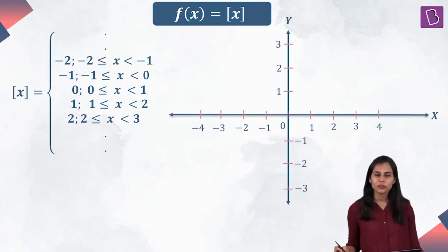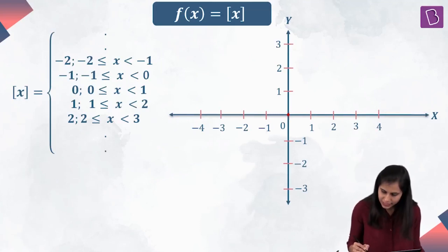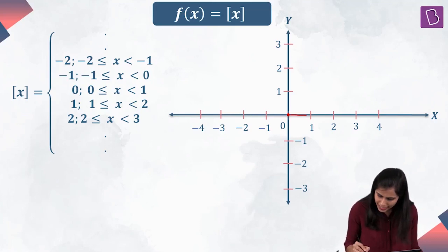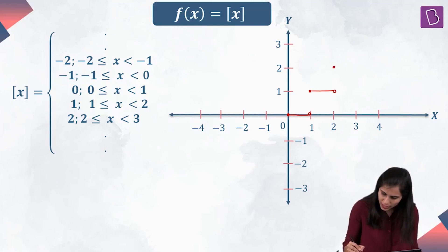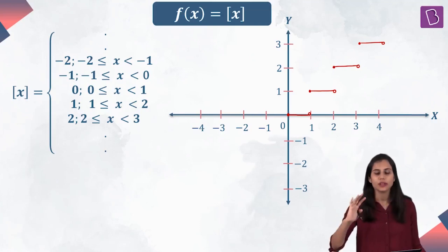Now that I have the definition of the bracket x function, let's quickly plot its graph. At 0, the value of the function is 0. From 0 to 1 it is 0, but at 1 it is 1. Then from 1 to 2 it is throughout 1; at 2 it is 2. From 2 to 3 it is throughout 2; at 3 it is 3. From 3 to 4 it is throughout 3, and then at 4 it is 4, and so on.